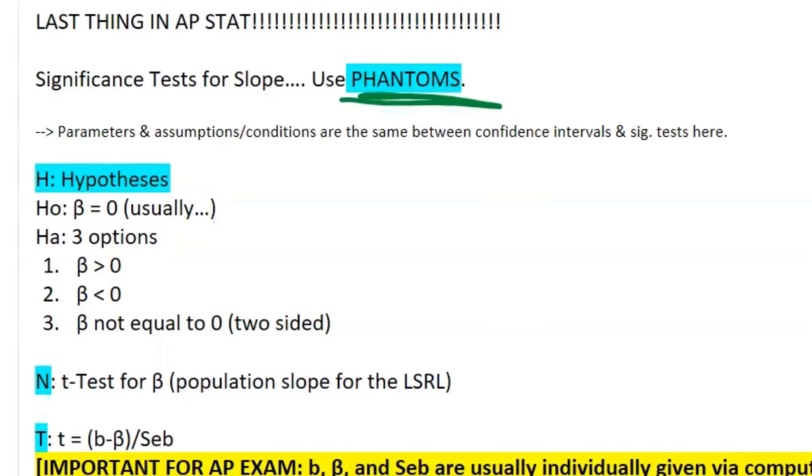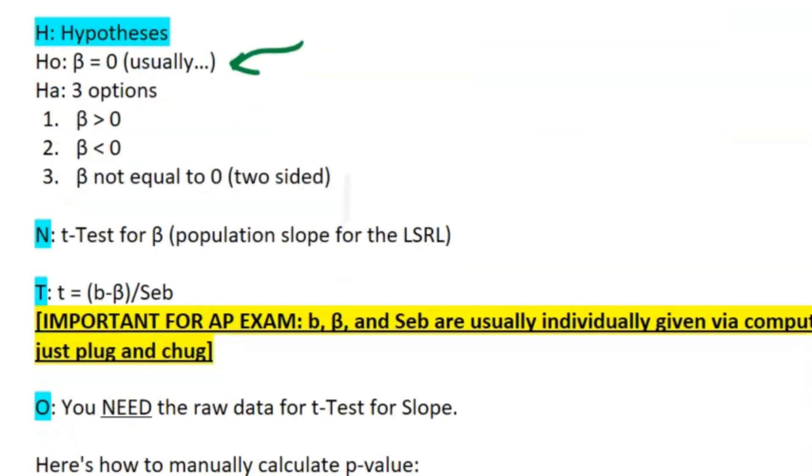Your hypotheses, now because you are doing a significance test: your null is usually set to zero because you're under the assumption that there is no linear relationship in the beginning. But this can change. For example, a scientist is trying to disprove a model that already shows a linear relationship, then your β value would be set equal to like one. The alternatives would be greater than zero, less than zero, or if it's a two-sided test, not equal to zero.